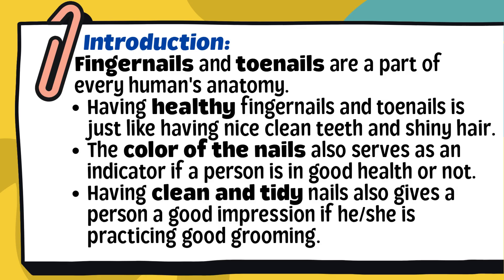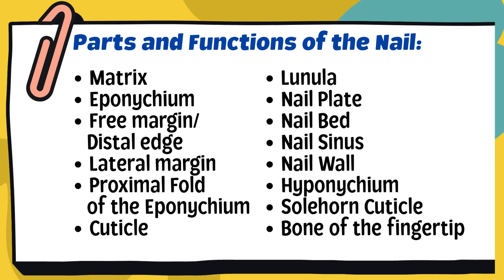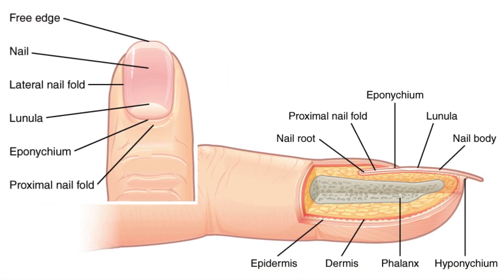The color of the nails also serves as an indicator of a person's health. Healthy nails are usually pinkish and smooth, while brittle or discolored nails can be a sign of poor hygiene or health problems. Having clean and tidy nails also gives a person a good impression of practicing good grooming. Now let's look at a diagram showing the parts of the nail — each part has a special function that keeps our nails strong, clean, and healthy.